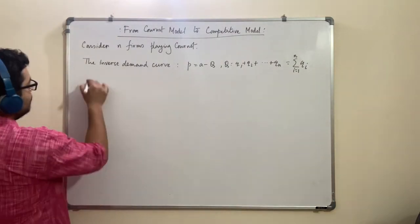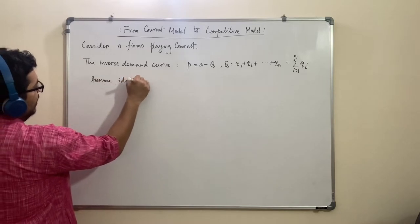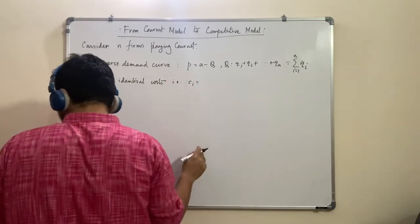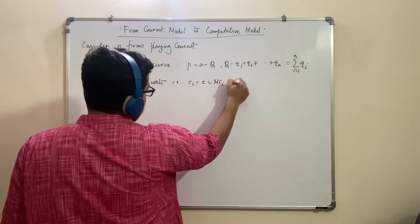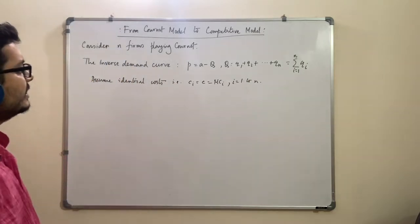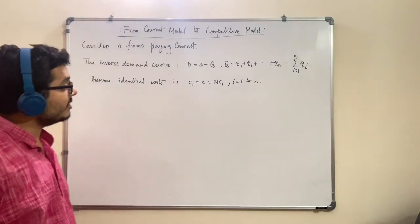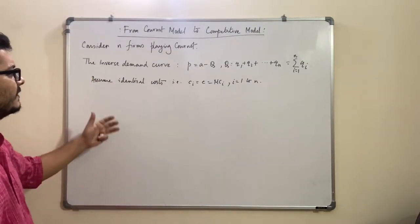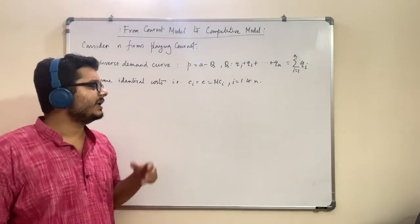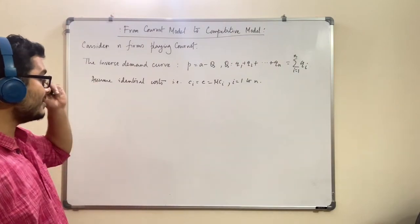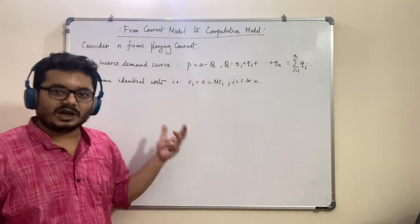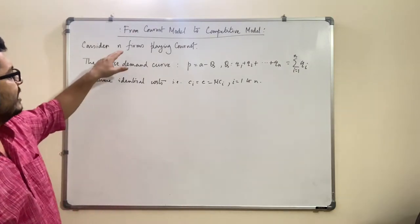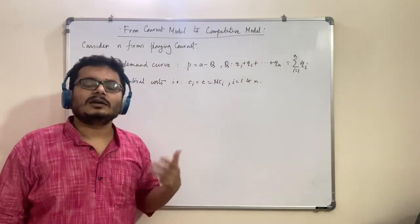We are also assuming identical costs — that is, Ci equal to small c, that is MCi where i runs from 1 to N. So we are assuming that not only is the marginal cost constant for everybody, but also that the cost itself is the same for everybody. You can change these things but it will only increase the length of the result and make the expressions look complex. Unless specified in an exam, you can always use this structure, because it is sufficient to show that if we increase the number of firms, the Cournot price will reach the competitive price.